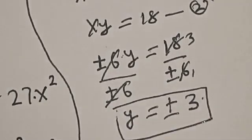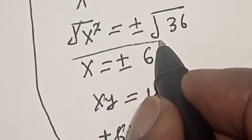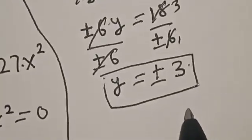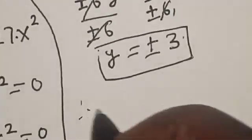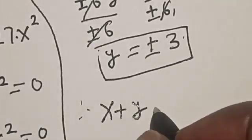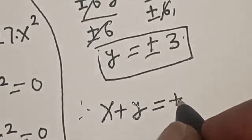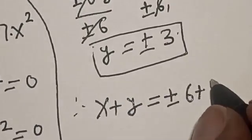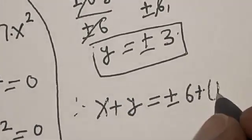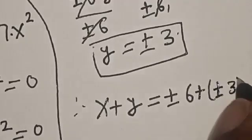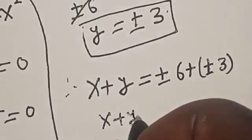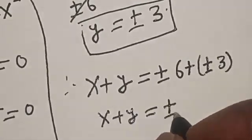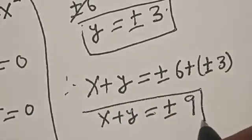We have found x equals plus or minus 6 and y equals plus or minus 3. The question asks for the value of x plus y. Therefore, x plus y equals plus or minus 6 plus plus or minus 3, so x plus y equals plus or minus 9. That is our final answer.